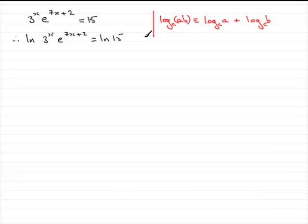So we're dealing with logs in base e. So what we can do here is, using this rule, say that this is therefore the same as the natural log of 3 to the power of x plus the natural log of e to the power of 7x plus 2. And then that's equal to this term on the end here, the natural log of 15.